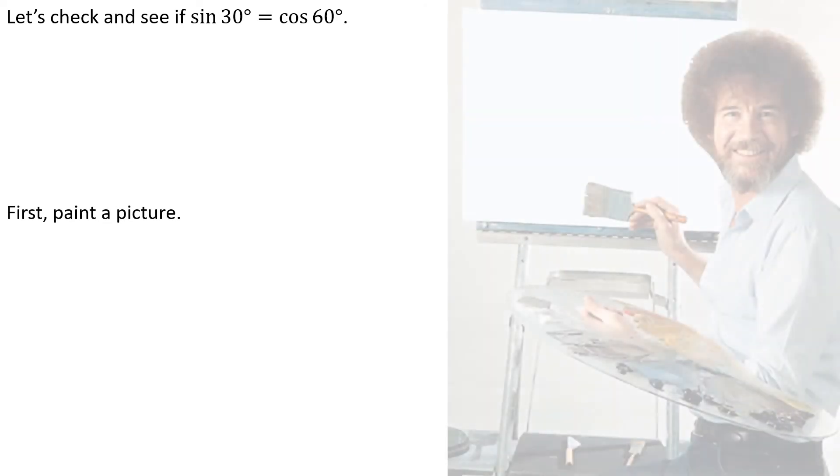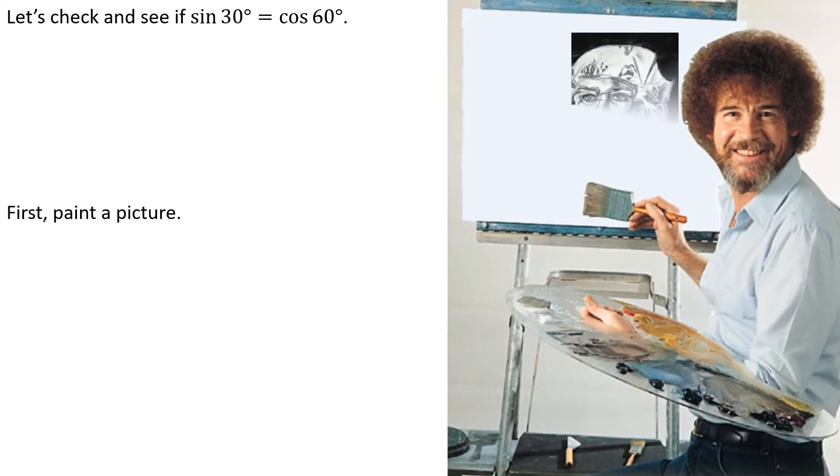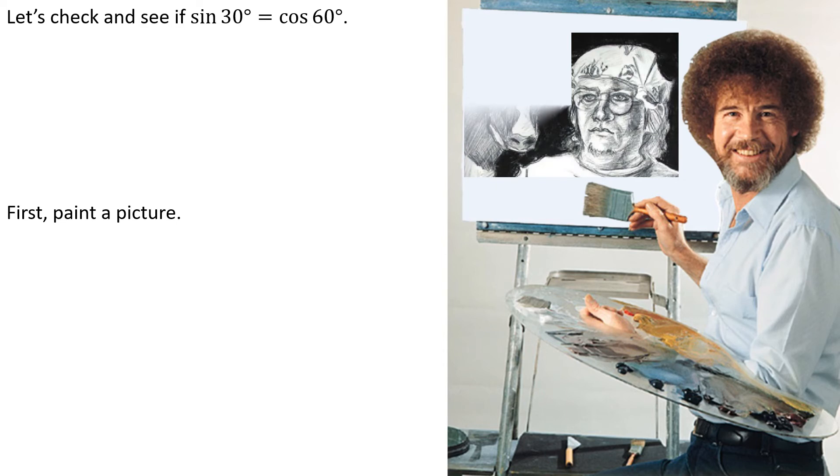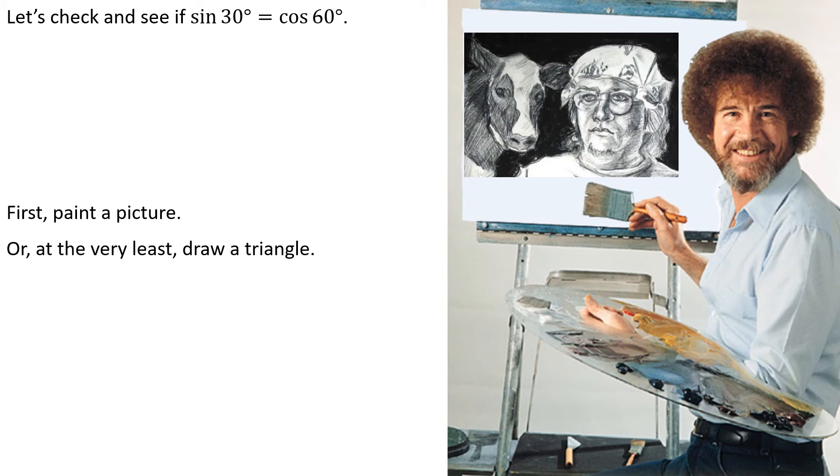Okay, let's see if this is really working, right? 90 minus 30 is 60. So the claim is the sine of 30 degrees has to be the same as the cosine of 60 degrees. How are we going to do this? Ooh. Oh, what a beautiful masterpiece. Thank you, Bob. There's Bob Ross coming through with a masterpiece. Although, actually, just a triangle would probably do better.